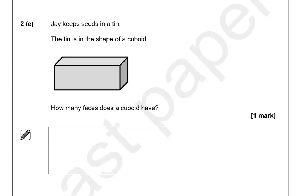How many faces does a cuboid have? Counting the faces: one, two, three, four on the sides, five on the back, and six below. So a cuboid has six faces.